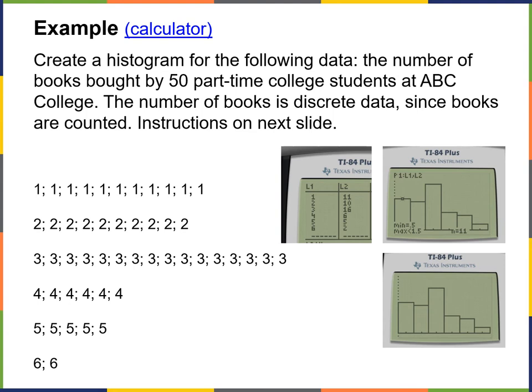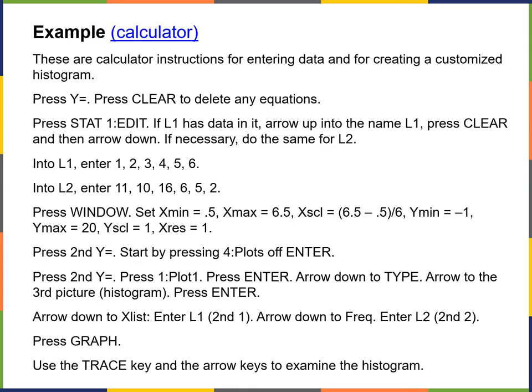What we're going to do here is create a histogram for the following data: the number of books bought by 50 part-time college students at ABC College. The number of books is discrete data since books are counted. The next slides in your text we're not going to cover here because we're not using the TI-84.